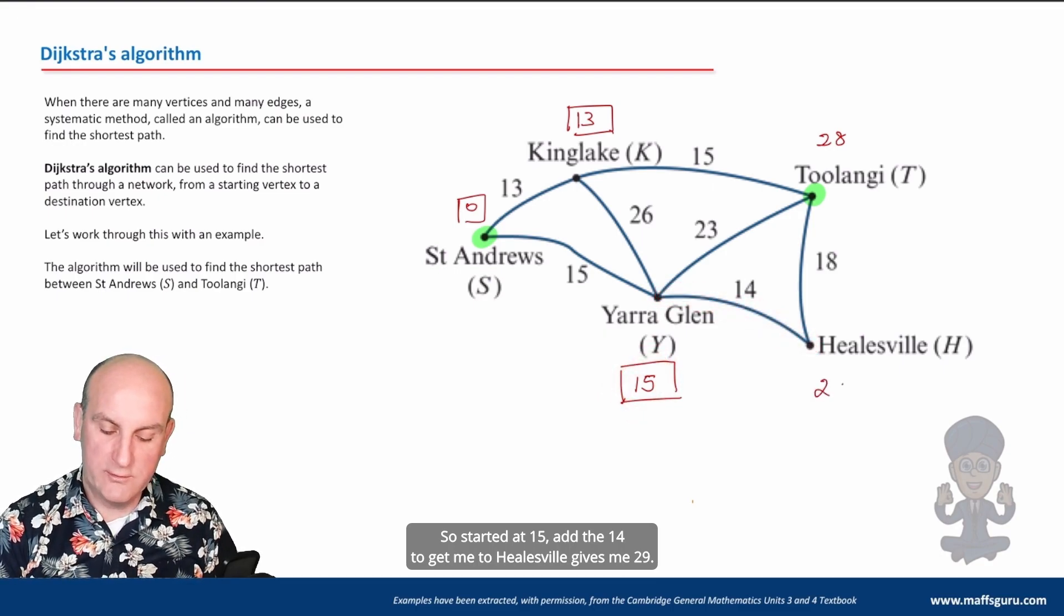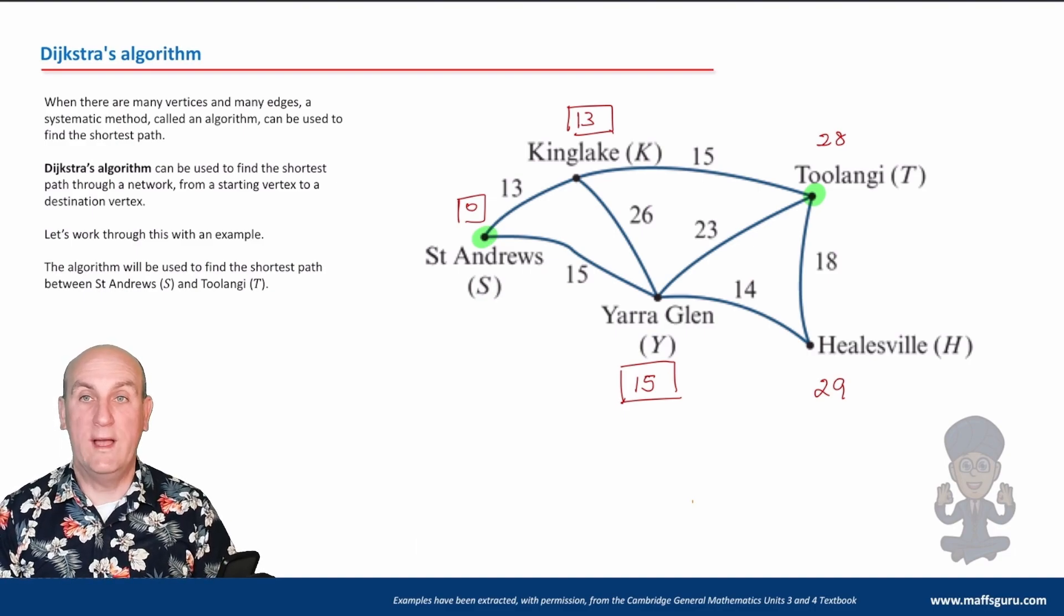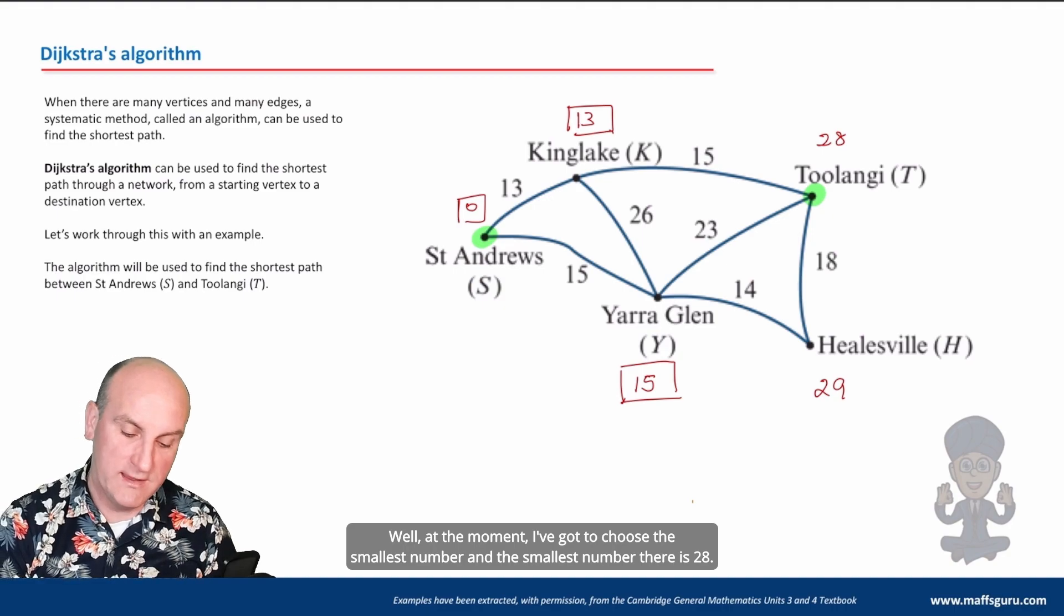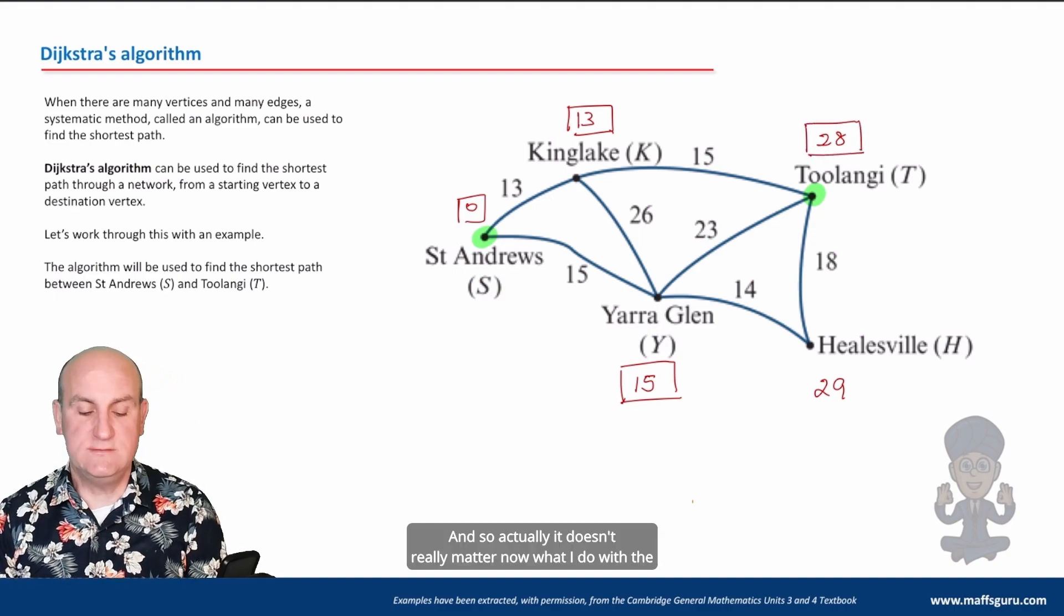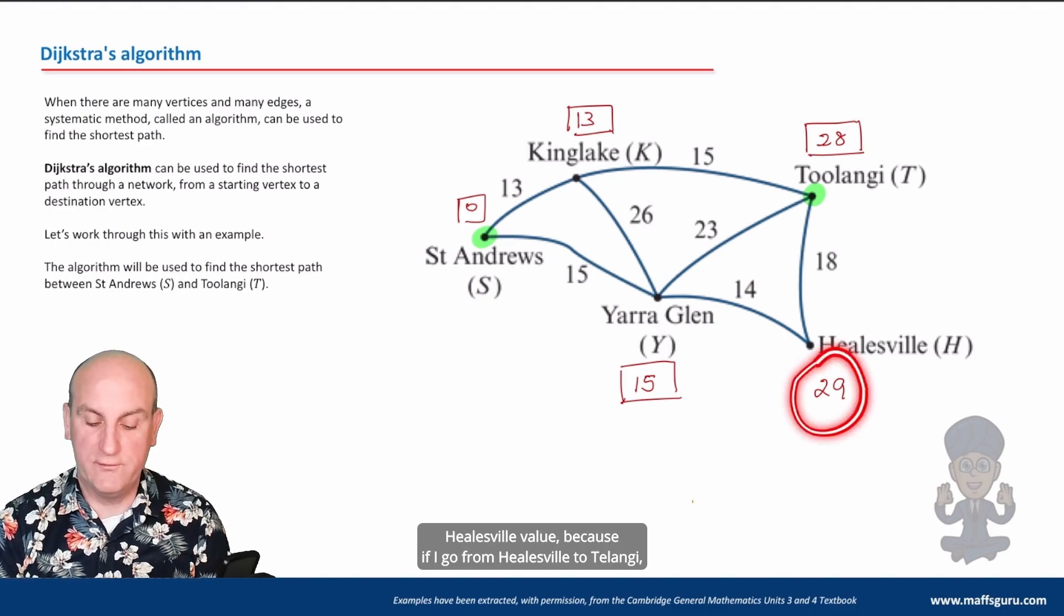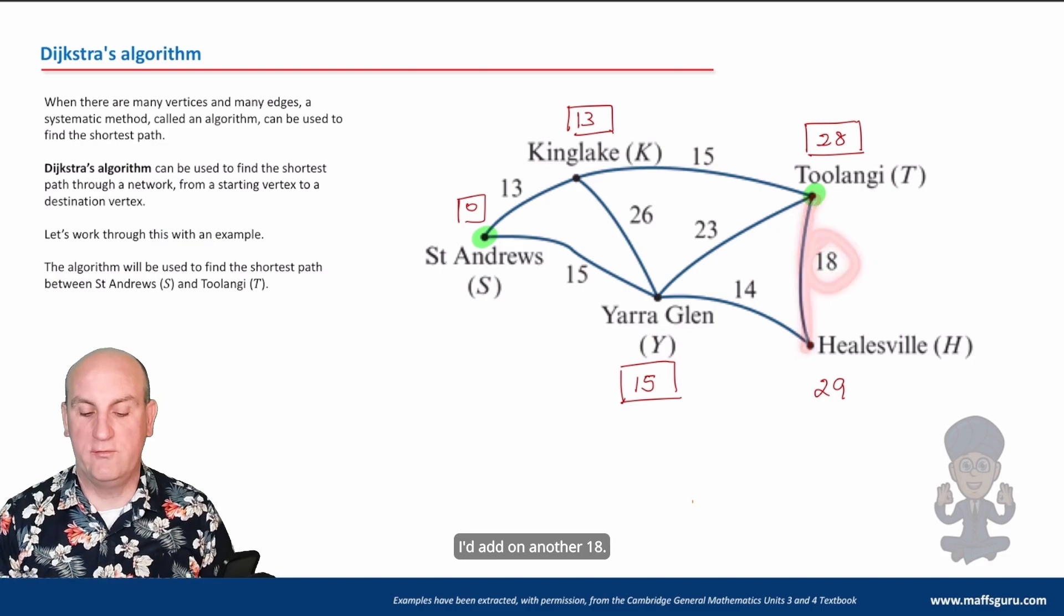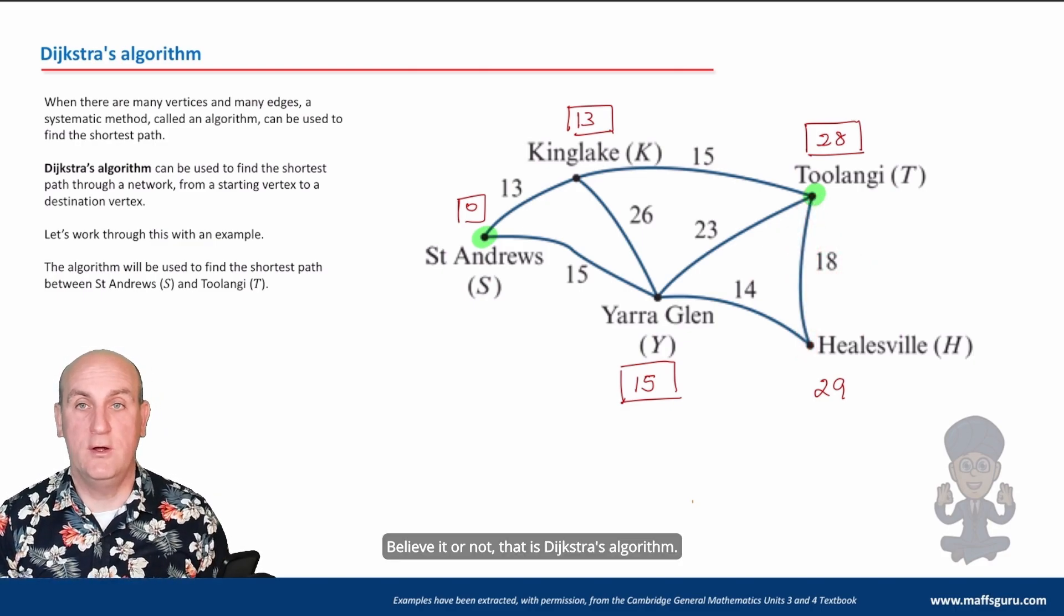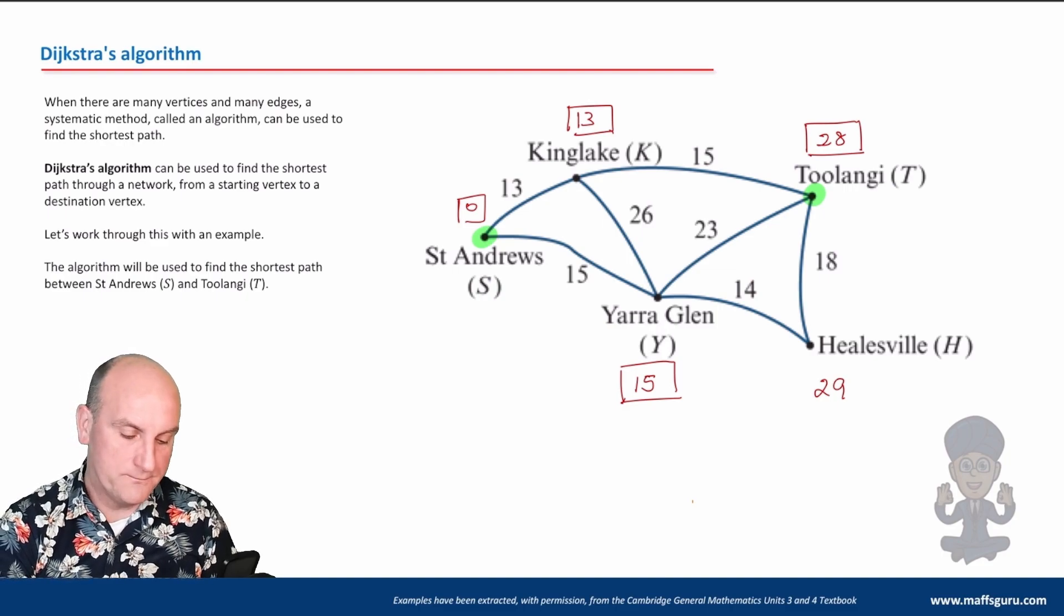What about my other path that I could have gone along? That was here. So started at 15, add the 14 to get me to Healesville gives me 29. Which one am I going to choose? Well, at the moment I've got to choose the smallest number, and the smallest number there is 28. And so actually it doesn't really matter now what I do with the Healesville value, because if I go from Healesville to Toolangi, I'd add on another 18—that's going to be way bigger than 28. And I'm done. Believe it or not, that is Dijkstra's algorithm. You're just working your way around in a logical way, and I've got another example coming up as well.